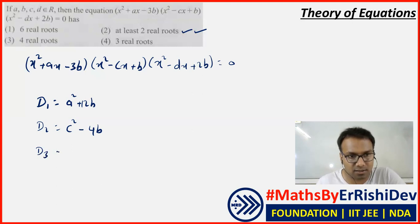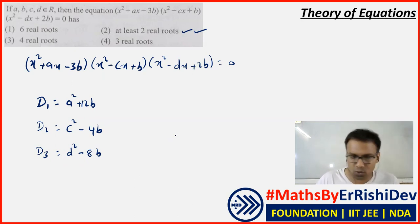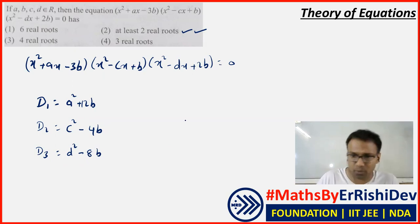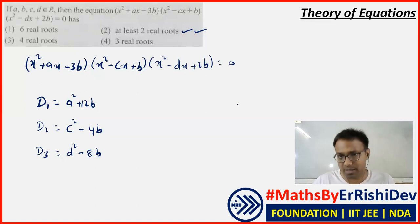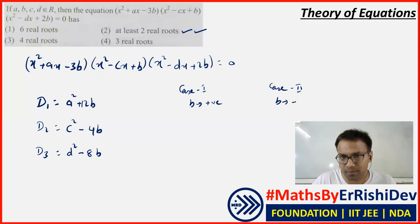Since a, b, c, d are real numbers, a², c², d² are always non-negative — no tension there, as squaring any real number always gives a positive result. We don't know the relative sizes of a, b, c, d. But since B appears in every discriminant, I'll consider two cases: Case 1 — when B is positive, and Case 2 — when B is negative.